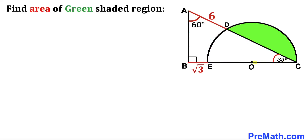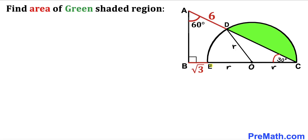In the next step I'm going to connect center O with point D. Now we can see that OD is the radius of this semi-circle, so I'm going to label it as lowercase R. Likewise, OC is the radius as well, so that is also R. And EO is the radius as well, so that is also R.